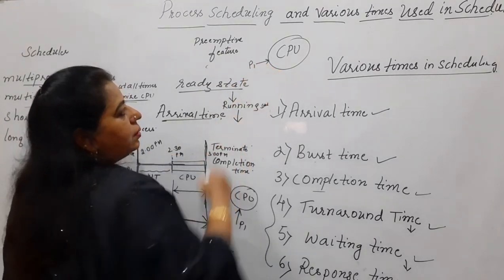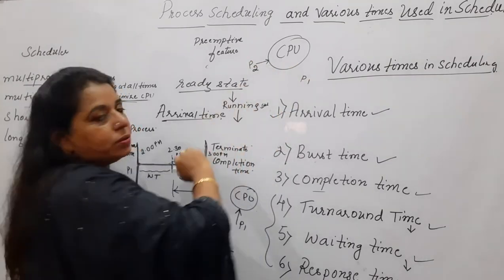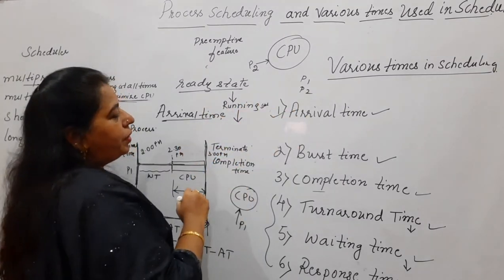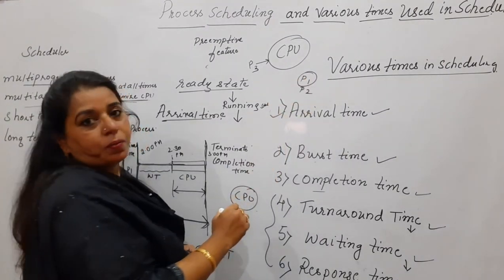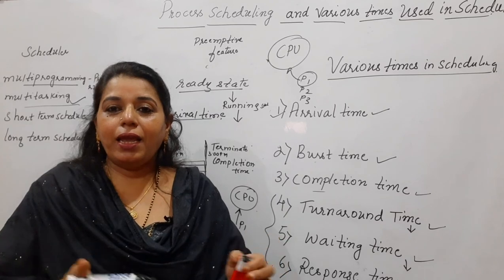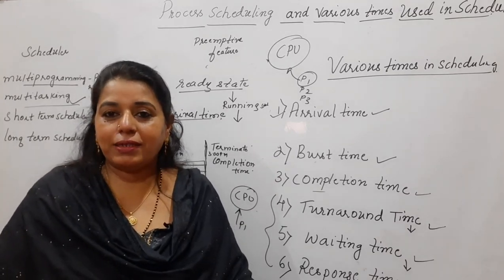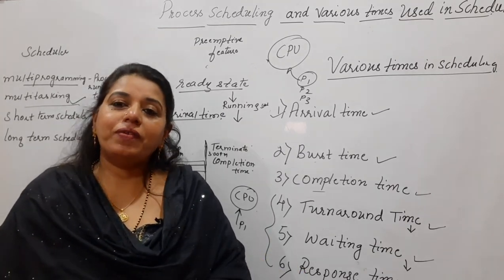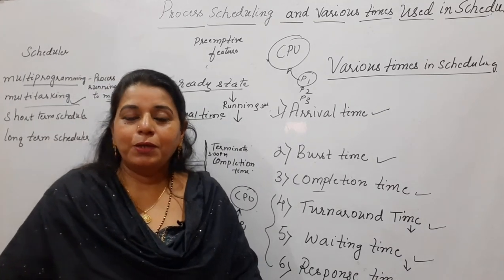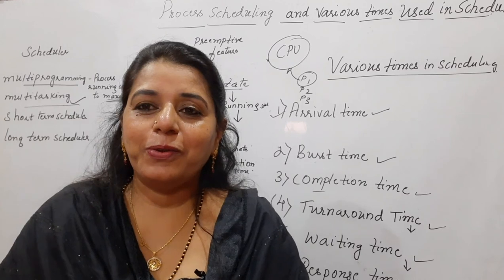For example, process P1 is assigned to CPU, P1 makes an I/O request and is deallocated, then P2 is assigned, P2 also makes an I/O request and is deallocated, then P3 runs, and when P1 completes its I/O it is reassigned to the CPU. The CPU is completing the job of all three processes in parts — that is multitasking, or time slicing. This is all about the introduction to process scheduling and the various times needed. In future sessions I shall explain the different scheduling algorithms and how to calculate these times. Hope this session is useful. Thank you, bye-bye, take care.